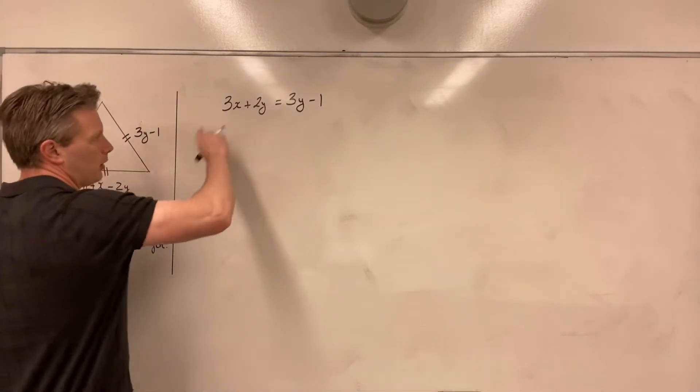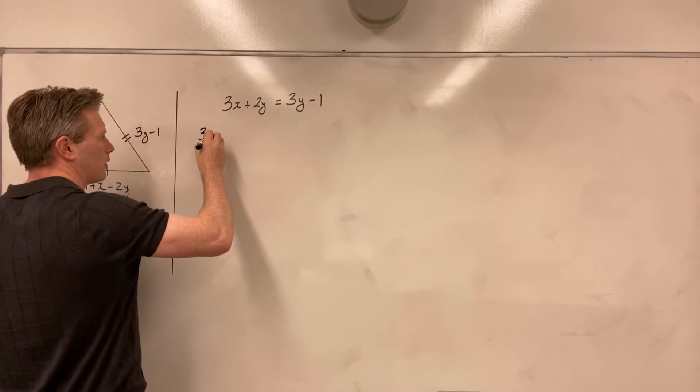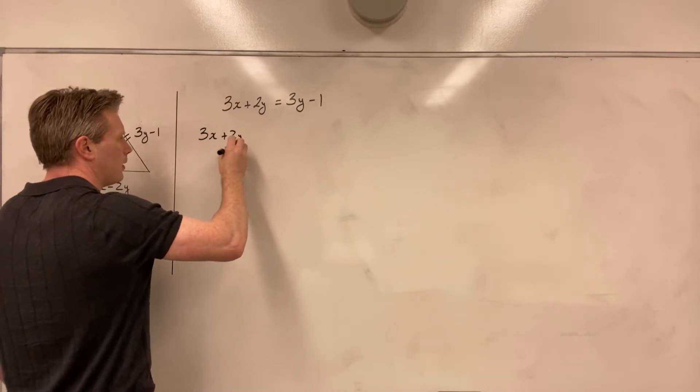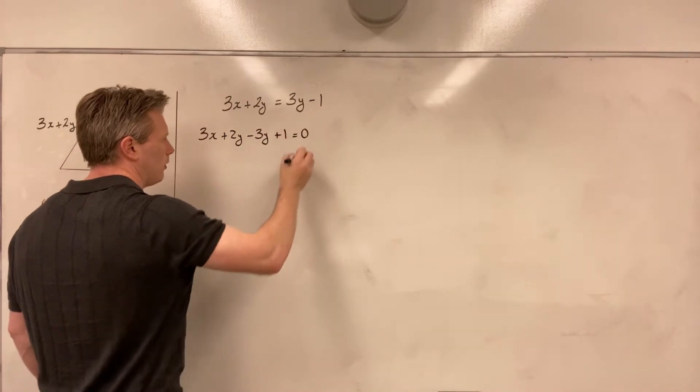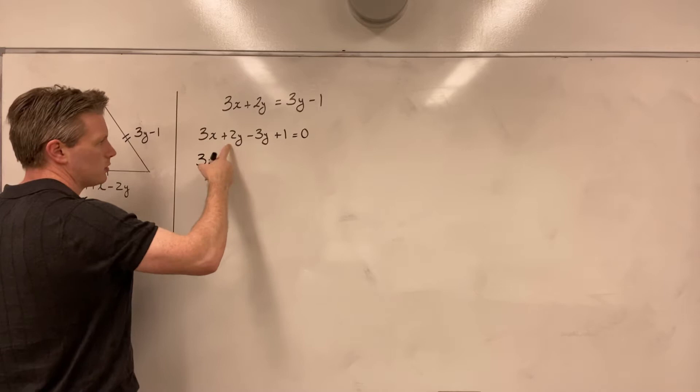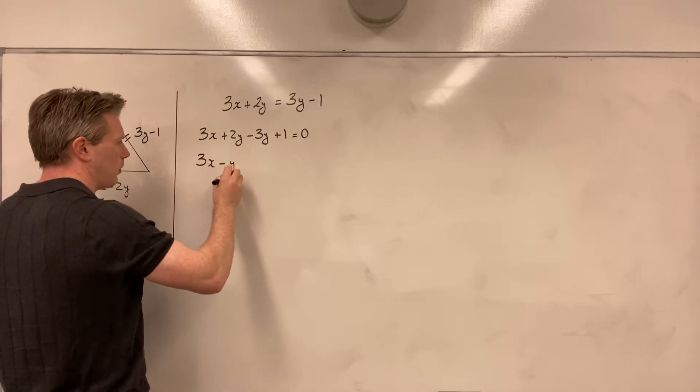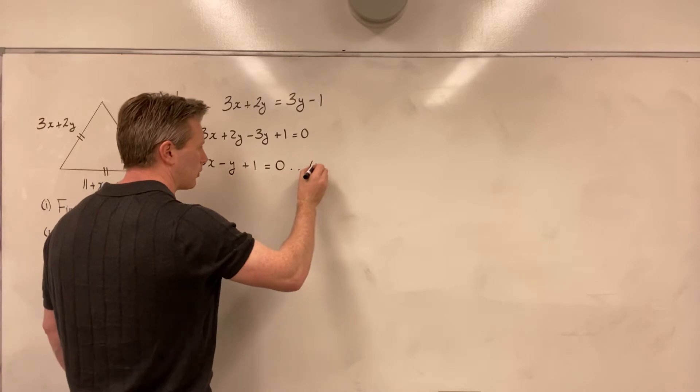I will bring over from the right to the left my 3y minus 1, and so I get 3x plus 2y minus 3y plus 1 is equal to 0. So combining my y terms, I've got 3x, 2y minus 3y, that's minus y, plus 1 is equal to 0. I will call that equation number 1.